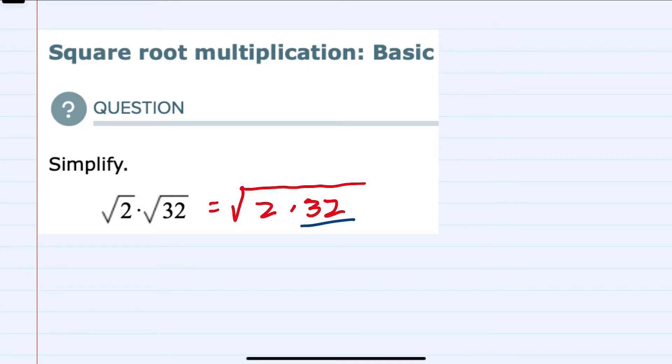The 32 can be written as 2 times 16, 16 being 2 times 8, 8 being 2 times 4, and the 4 being 2 times 2.